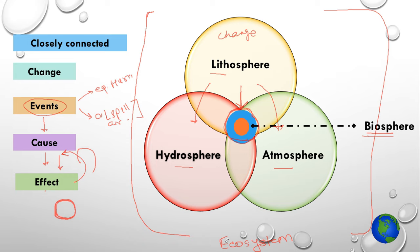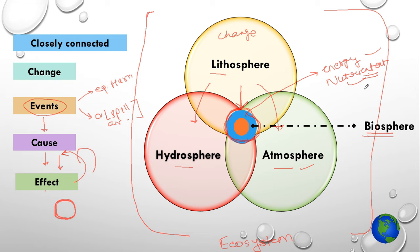Apart from this, these spheres are continuously interacting with each other in the form of energy transfer and nutrient recycling. This is done through the common area which is called biosphere. Basically biosphere is using lithosphere, hydrosphere, and atmosphere for energy transfer and nutrient recycling.